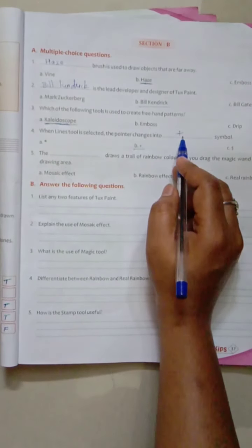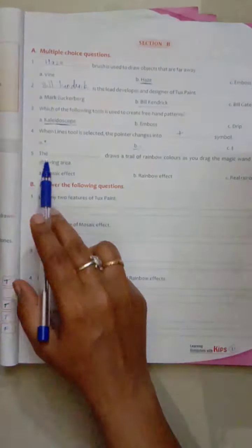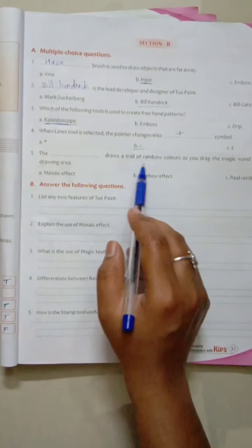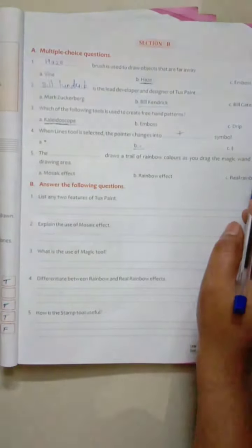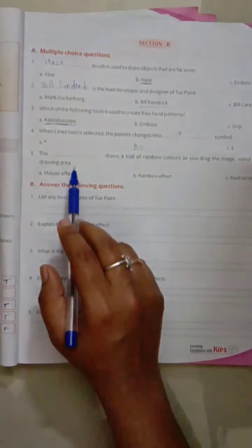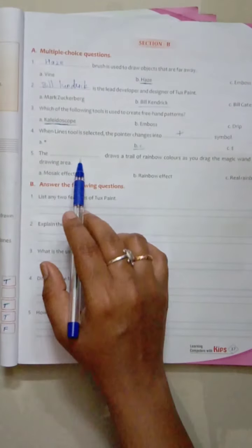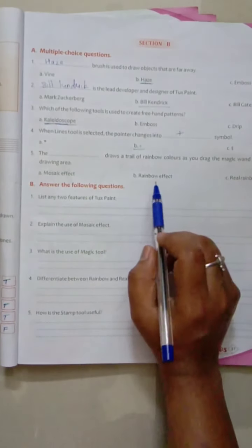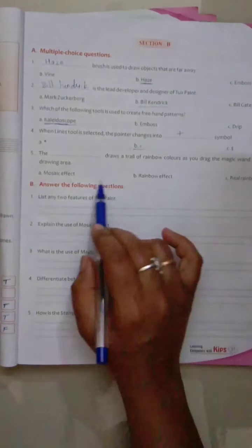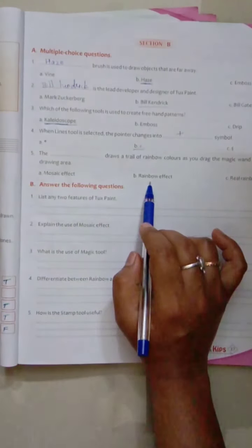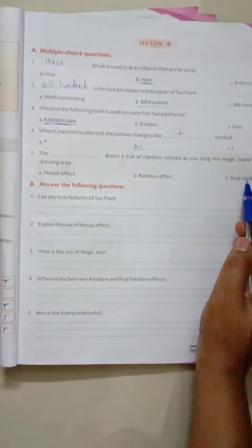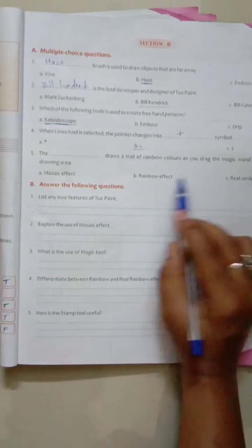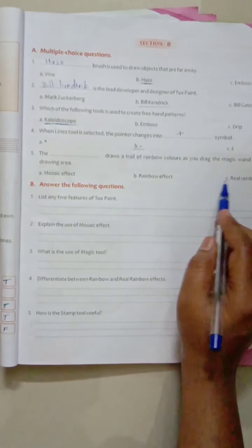Answer can be written over here. The dash draws a trail of rainbow color as you drag the magic wand on the drawing area. The dash draws a trail of a rainbow color. So whether it is rainbow effect or real rainbow. Whenever you go for the rainbow effect, there are two types of rainbow effects in your Tux Paint. So let us go to the particular page number and learn about it.